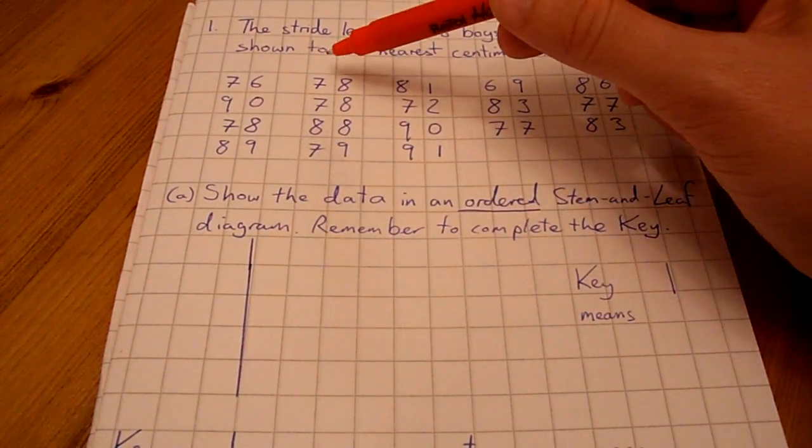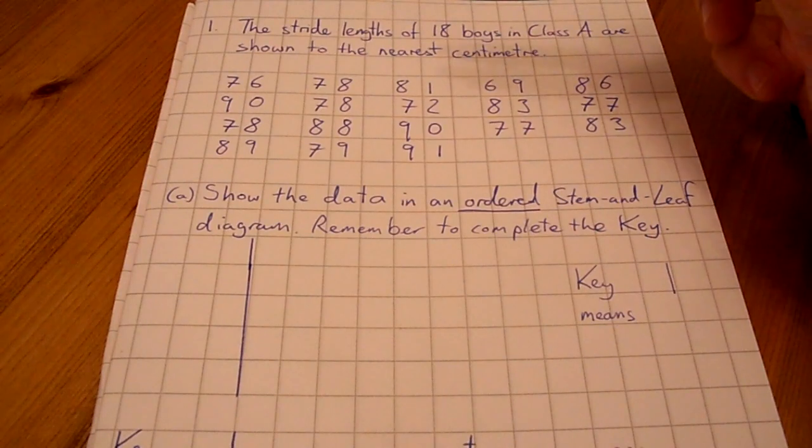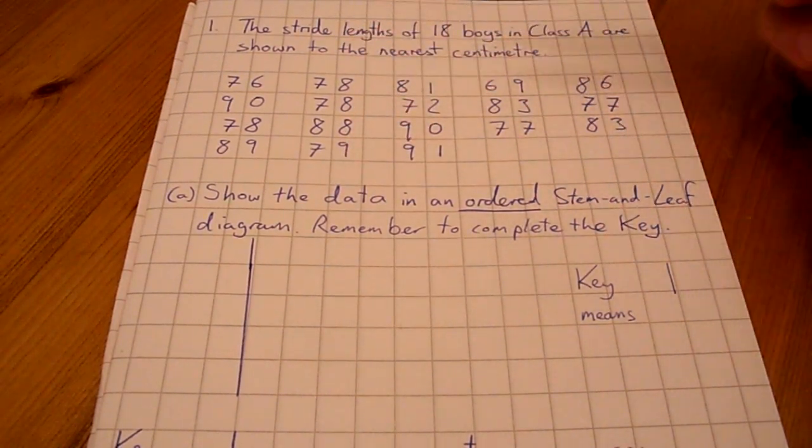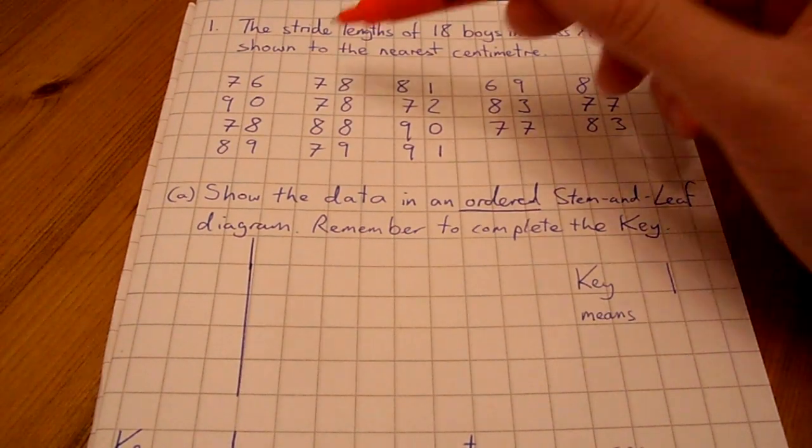Remember, the stem is the number in the tens column in this case. The leaf is the units column. We only need to write the stem once for every tens column.